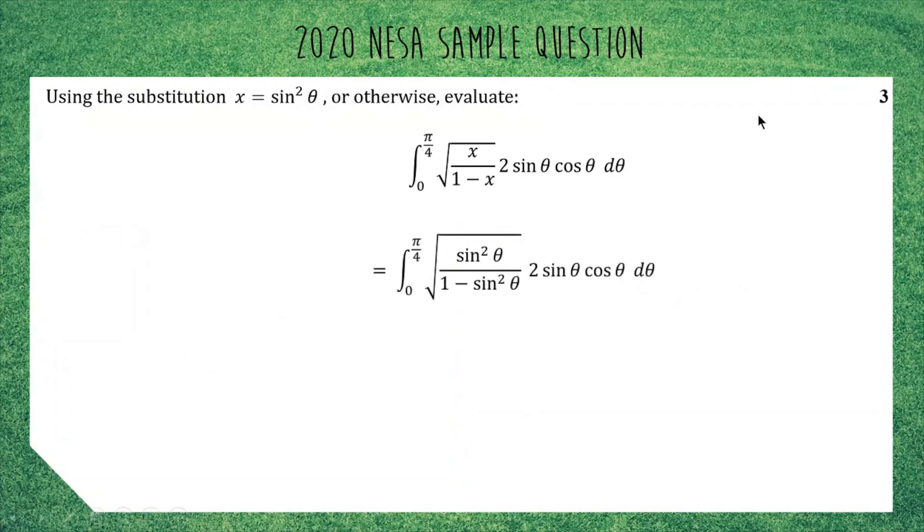So our integral has become, instead of x over 1 minus x in the square root, those x's are now sine squareds. Now I'm hoping that when you see 1 minus sine squared, your Pythagorean identity alarm goes off because 1 minus sine squared is, of course, cos squared. We can change this from 1 minus sine squared to cos squared.